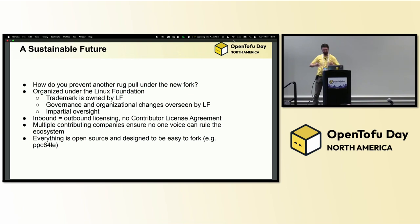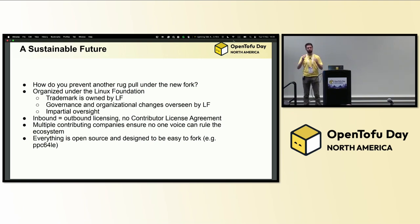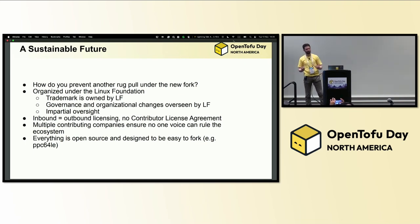The inbound licensing is the outbound licensing — we don't have a contributor license agreement. We cannot relicense OpenTofu. Functionally, we'd have to get sign-offs from every single person who's contributed to OpenTofu and all the commits to Terraform before that. So it's always going to be open, it's always going to be easy to fork. This is the promise of OpenTofu.